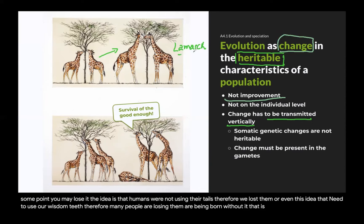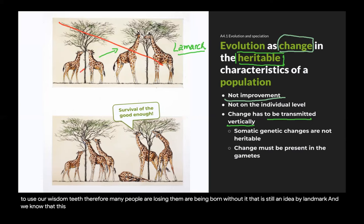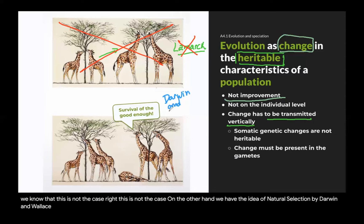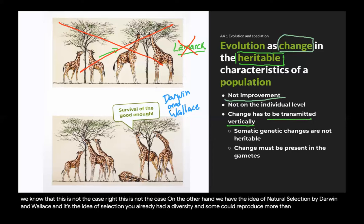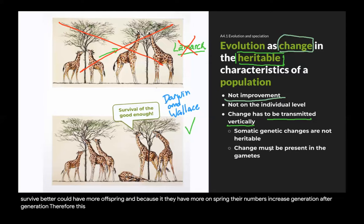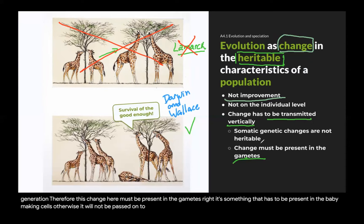We know that Lamarck's idea is not the case. On the other hand, we have the idea of natural selection by Darwin and Wallace — the idea of selection. You already had diversity, and some individuals could reproduce more than others, survive better, and have more offspring. Because they have more offspring, their numbers increase generation after generation. Therefore this change must be present in the gametes — in the baby-making cells — otherwise it will not be passed on to the next generation.